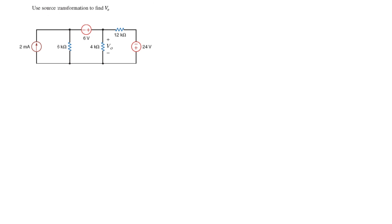So this problem asks us to use source transformation to find VO. And if you're not familiar with source transformation, it's a really useful way to turn ugly circuits into not-so-ugly circuits by being able to change current sources into voltage sources and voltage sources into current sources.